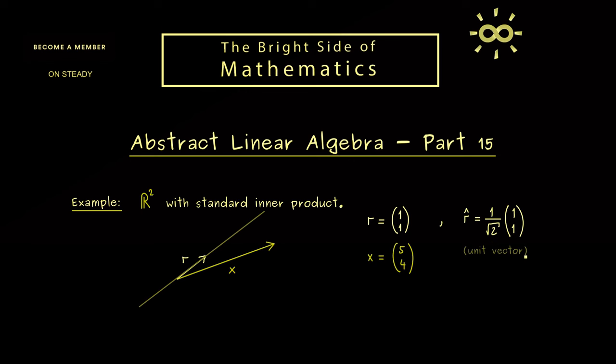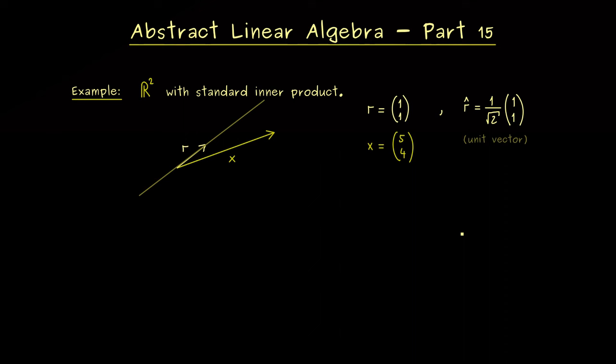In conclusion, you could call r-hat a unit vector. Now I'm telling you that because the formula for calculating the orthogonal projection looks much simpler with the unit vectors involved. For this please recall, orthogonal projection means that we split the vector x into two components. The one component that lies completely on the line here is what we call the orthogonal projection of x onto the line. In order to keep the notation simple, we call this component p and the other one n.